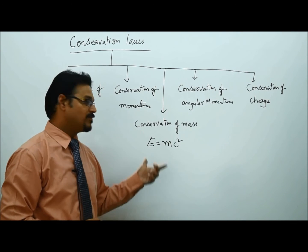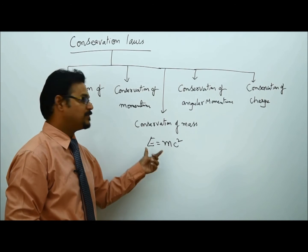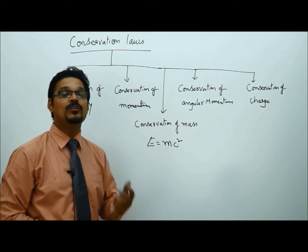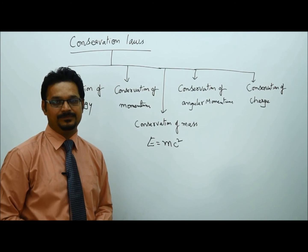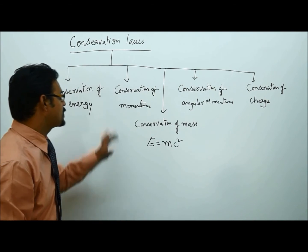Mass-energy equivalence. So once this formula was introduced by Einstein, the conservation of mass is replaced by E equals MC square. But this formula is more applicable in nuclear reactions. So as I told you, we are coming back to the conservation of momentum.